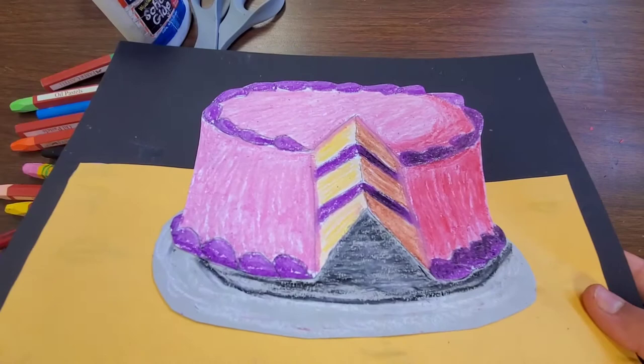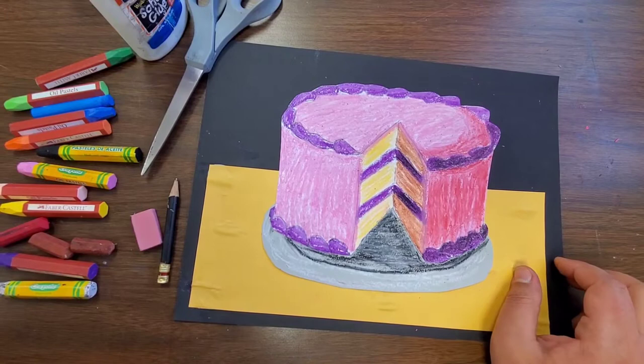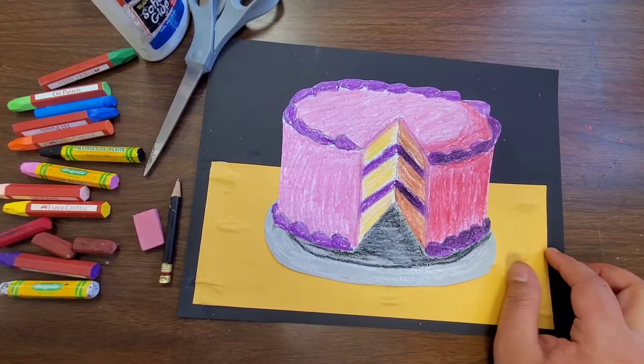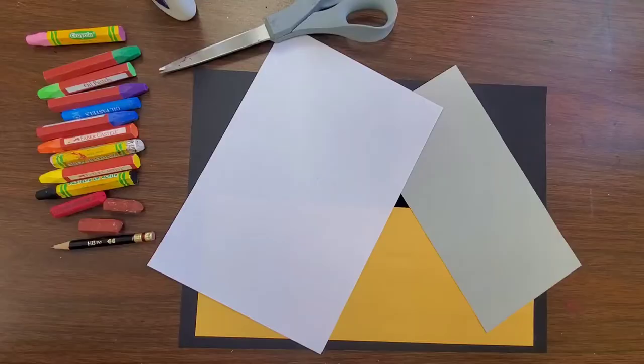Welcome back guys, this week we're going to be working on this birthday cake. You can use oil pastels or crayons for this, either one will work. Oil pastels are a little bit messy, so if you'd like to stay clean, crayons are going to be your best bet. Stay tuned for the other supplies.